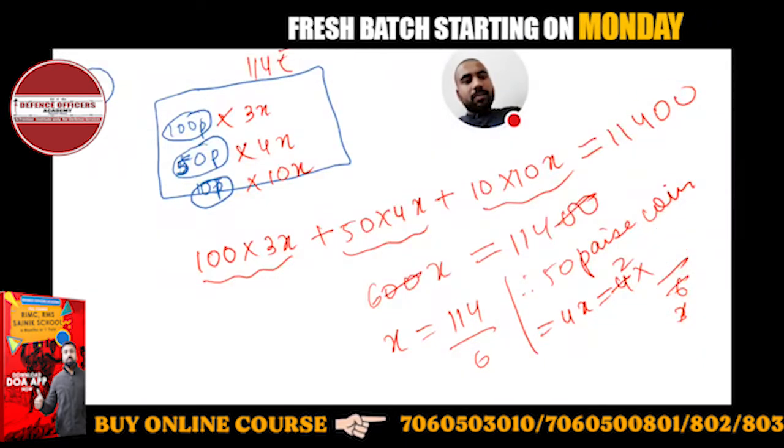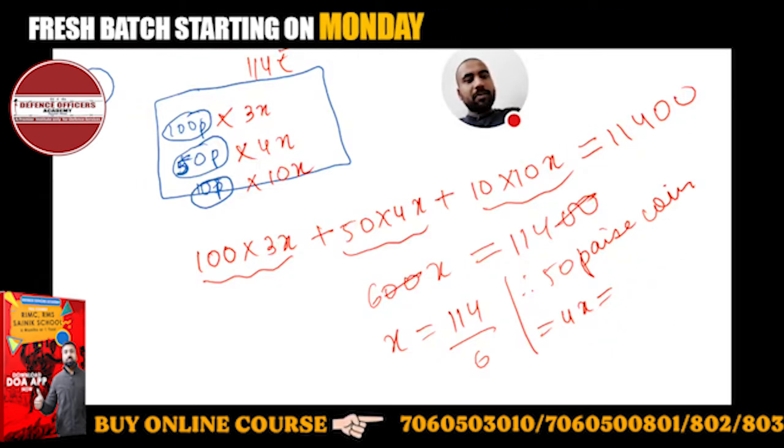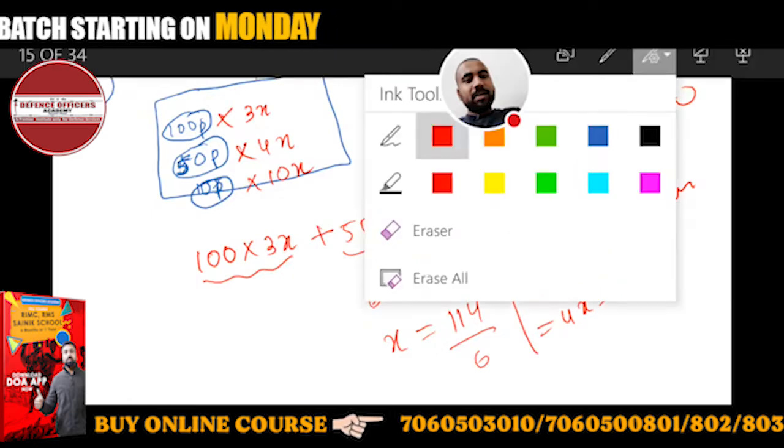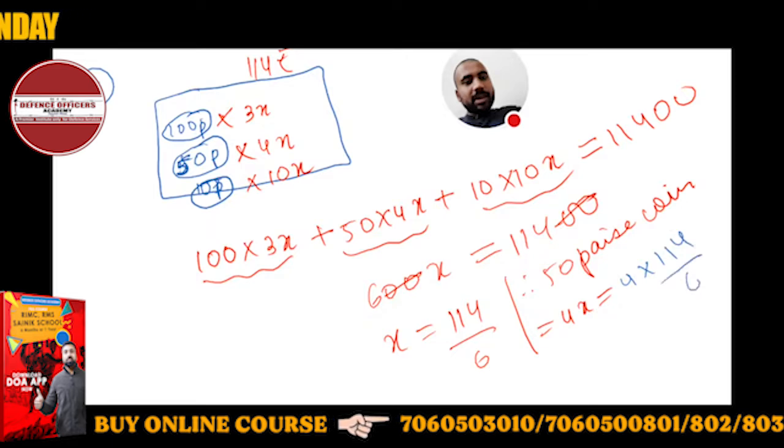You have to find 4x, so 4x means 114 by 6. So this will give you 4 into 114 by 6.